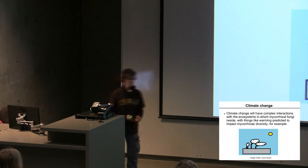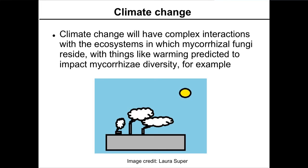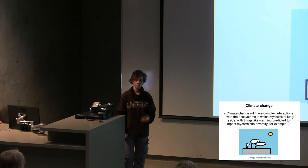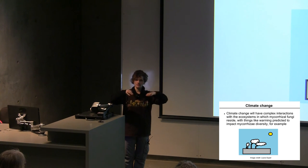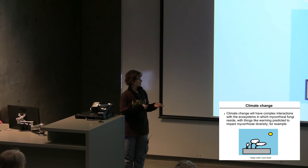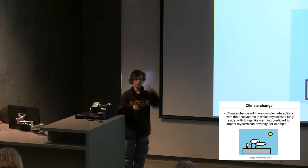With climate change as predicted by models, we can have major implications from warming, nitrogen deposition, and related changes because the whole ecosystem will shift, and that will cause shifts in the mycorrhizae. Because these systems are so complex, it's really hard to know exactly what's going to happen — that's why we're doing experiments. What has been shown consistently across many studies is that mycorrhizal diversity will shift, often downward, though it depends on the system.